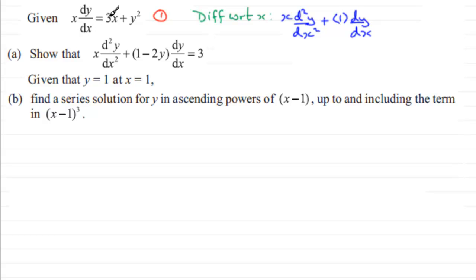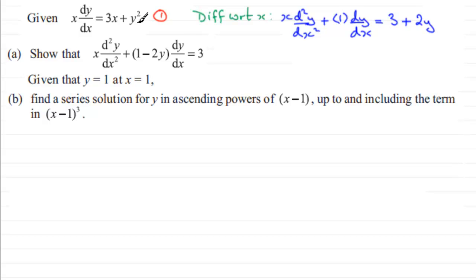That's the first part. On the right-hand side, differentiating 3x with respect to x gives 3. Then differentiating y² with respect to x — this is implicit differentiation — gives 2y times dy/dx.